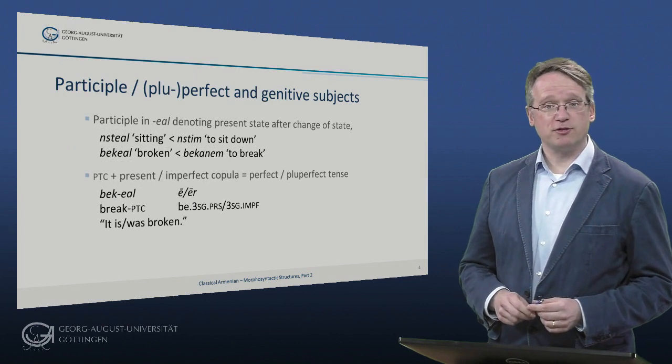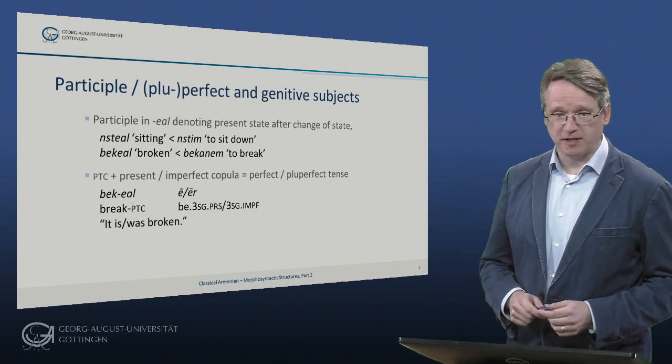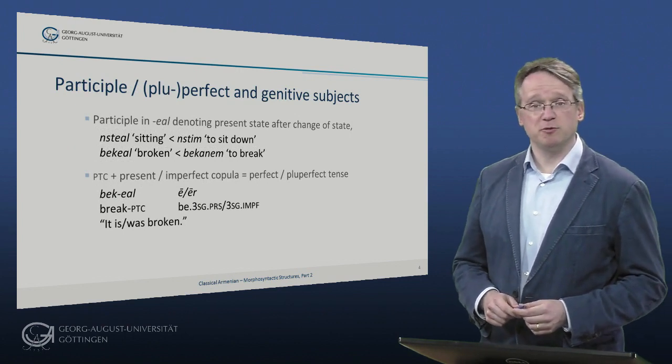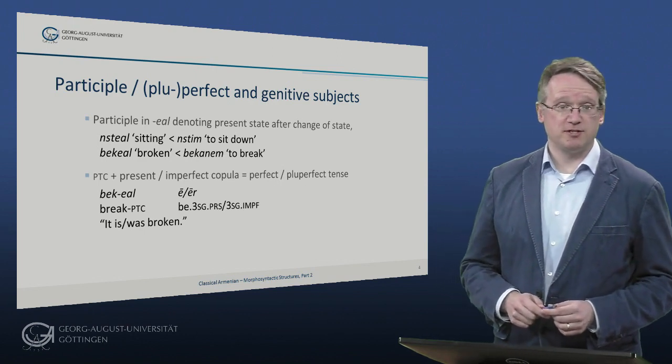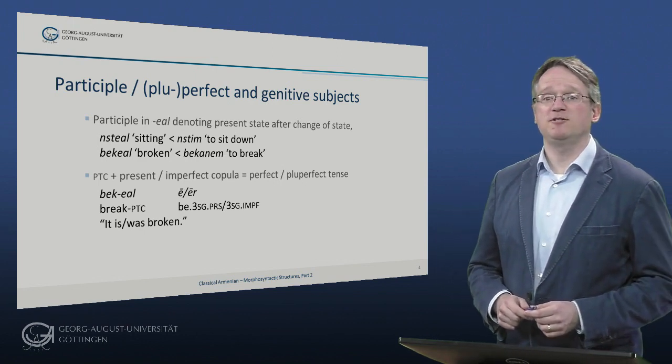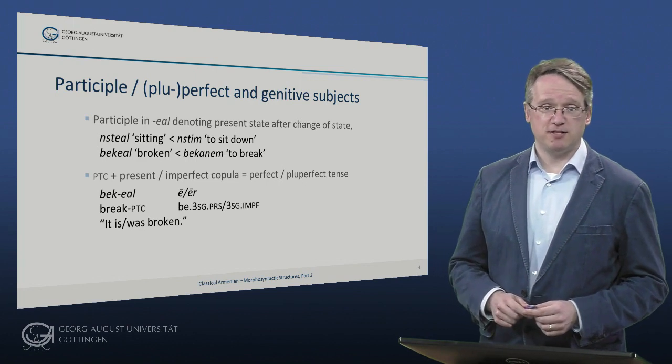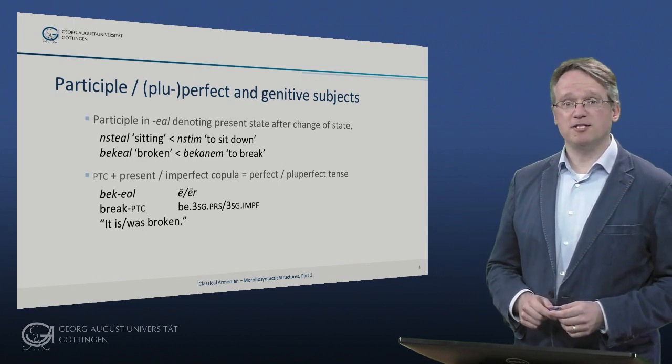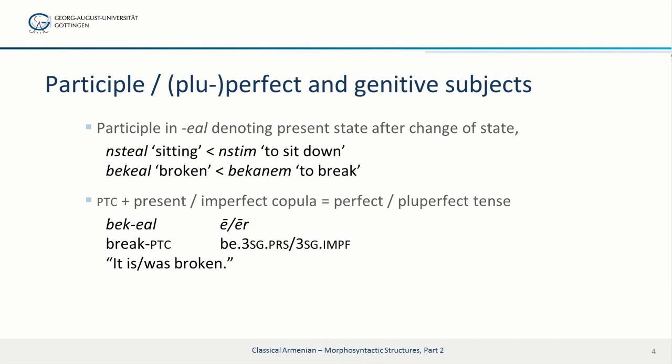First, the construction with the participle and the perfect. Armenian has a verbal participle in -eal denoting a present state, which in most cases is due to a preceding change of state, such as nsteal 'sitting', the participle of nstim 'to sit down', or bekaeal 'broken' from bekanem 'to break'. In combination with the present and imperfect tense of the copula, the participle forms the perfect and pluperfect tense respectively.